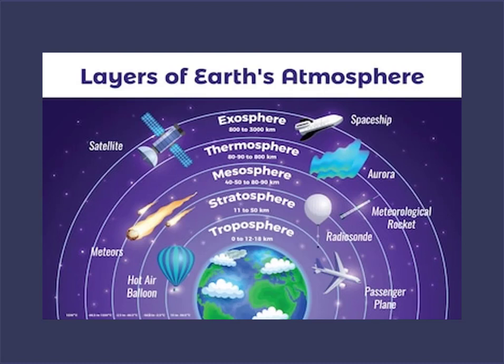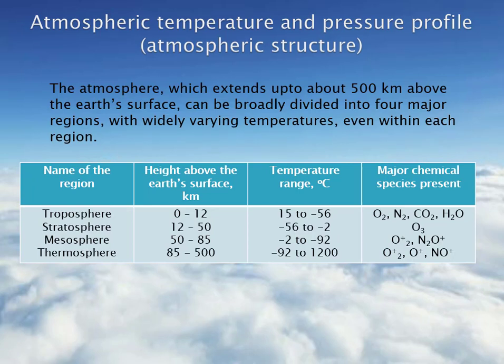The earth's atmosphere can be divided into four or five different layers. If we move from bottom to top, the layers are troposphere, stratosphere, mesosphere, thermosphere and exosphere.